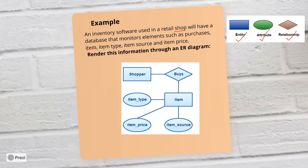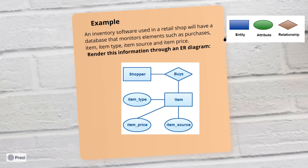What are the attributes of the item? Item type, item source, item price. So you have two entities here: one is your shopper and the other is your item. The relationship between them is buying. So you have a relationship connected to the attributes of the item.